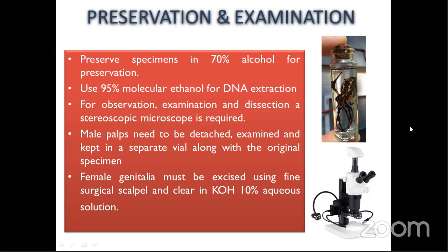For observation, examination, and dissection, we use a stereo zoom microscope. After specimens are preserved, they can be taken out and examined in detail. The most important taxonomic identification characters are found in the genitalia — the male palps and the female genitalia, the epigyne. Male palps are usually detached and examined and kept in separate vials. Female genitalia must be dissected out and the internal soft tissues cleared with 10% potassium hydroxide or sodium hydroxide.